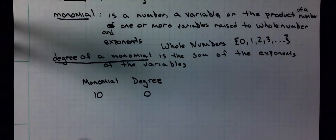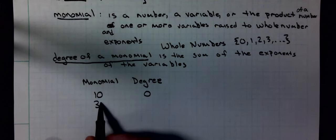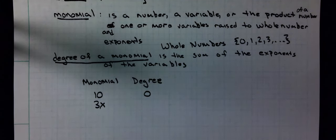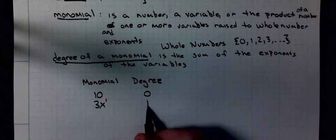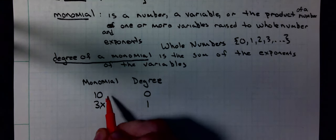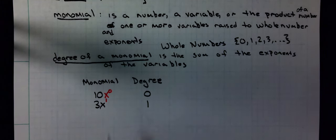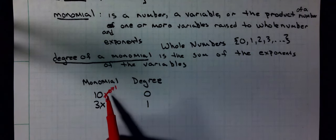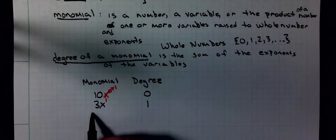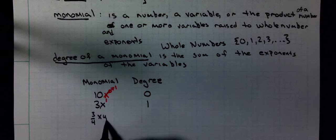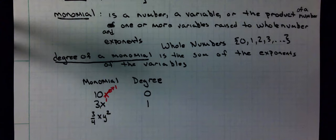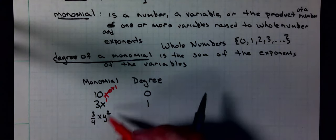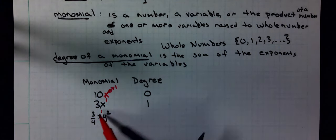If I have something like 3x, we have an invisible exponent of 1, so my degree is 1. I can even go back up to that 10. I can think of this as 10 times x to the 0 because x to the 0 is just 1. For 3/4 x y squared, it's the sum of the exponents of the variables. X has a 1 plus 2, so degree is 3.